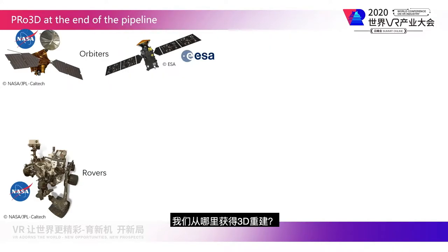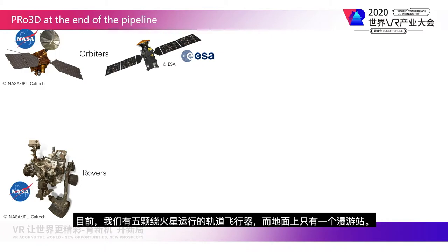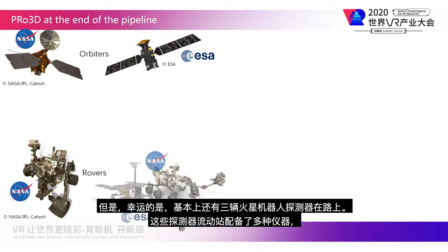Where does our data come from? Where do we get these 3D reconstructions from? There are multiple platforms surveying Mars — orbiters and rovers. At the moment we have five orbiters circling Mars and only one rover on the ground, but fortunately three more rovers are basically on the way.